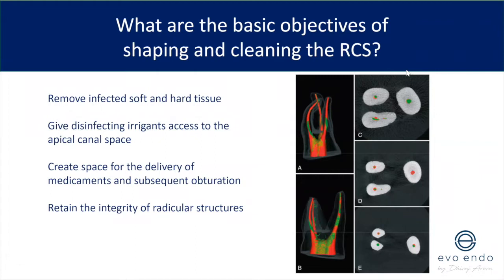We also want to create space and give disinfecting irrigants access to the apical canal space to effectively remove as much bacteria as we can. The principal aim of endodontics is to treat or prevent apical periodontitis. We also create space for the delivery of medicaments if doing two-stage endodontics, and subsequently we want to create the shape we're going to obturate.